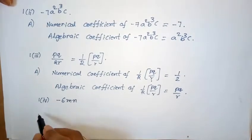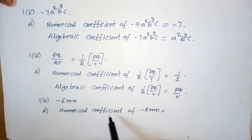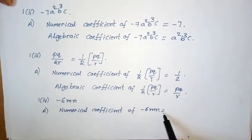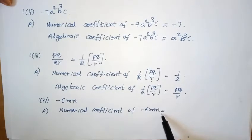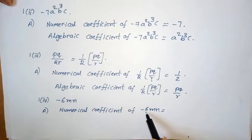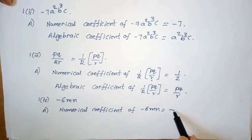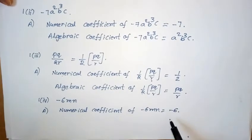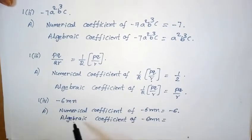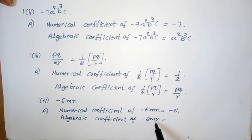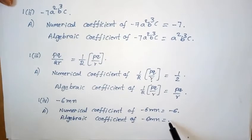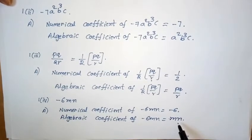Fourth one: minus 6mn. Numerical coefficient of minus 6mn — in this term, the number is minus 6, so minus 6 is the numerical coefficient. Algebraic coefficient of minus 6mn — the letters are m and n, so m times n is the algebraic coefficient.